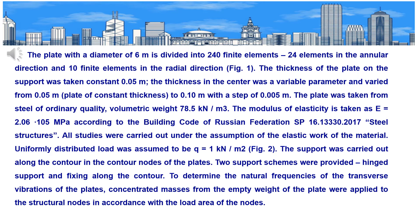The plate with a diameter of 6 meters is divided into 240 finite elements: 24 elements in the annular direction and 10 finite elements in the radial direction (Figure 1). The thickness of the plate on the support was taken constant, 0.05 meters. The thickness in the center was a variable parameter and varied from 0.05 meters to 0.10 meters with a step of 0.005 meters. The plate was taken from steel of ordinary quality, volumetric weight 78.5 kilonewtons per cubic meter. The modulus of elasticity is taken as 2.06×10⁵ megapascals according to the Building Code of Russian Federation SP 16.13330.2017 Steel Structures.